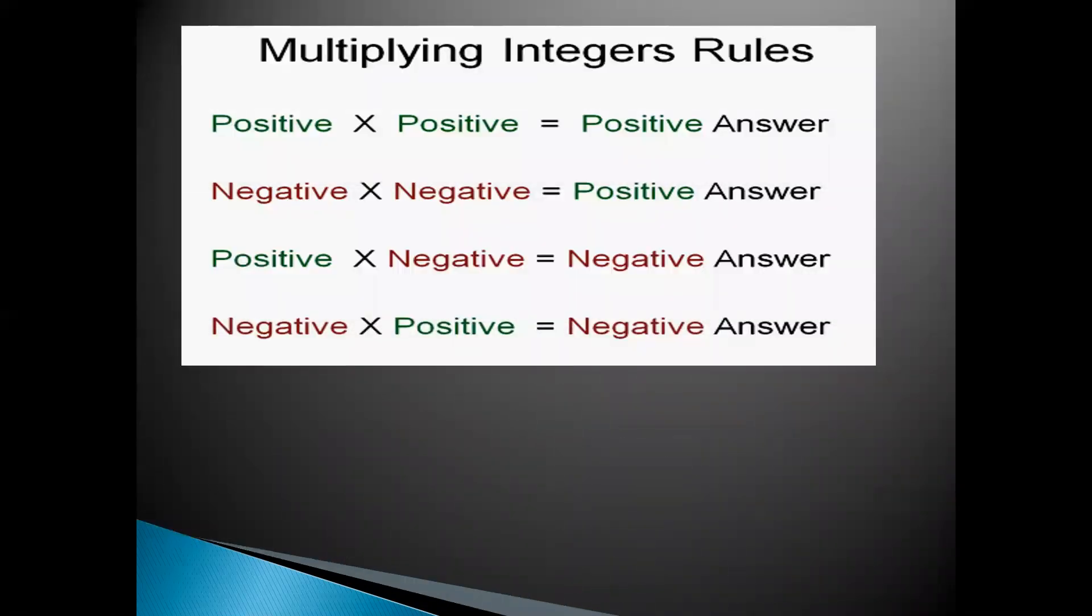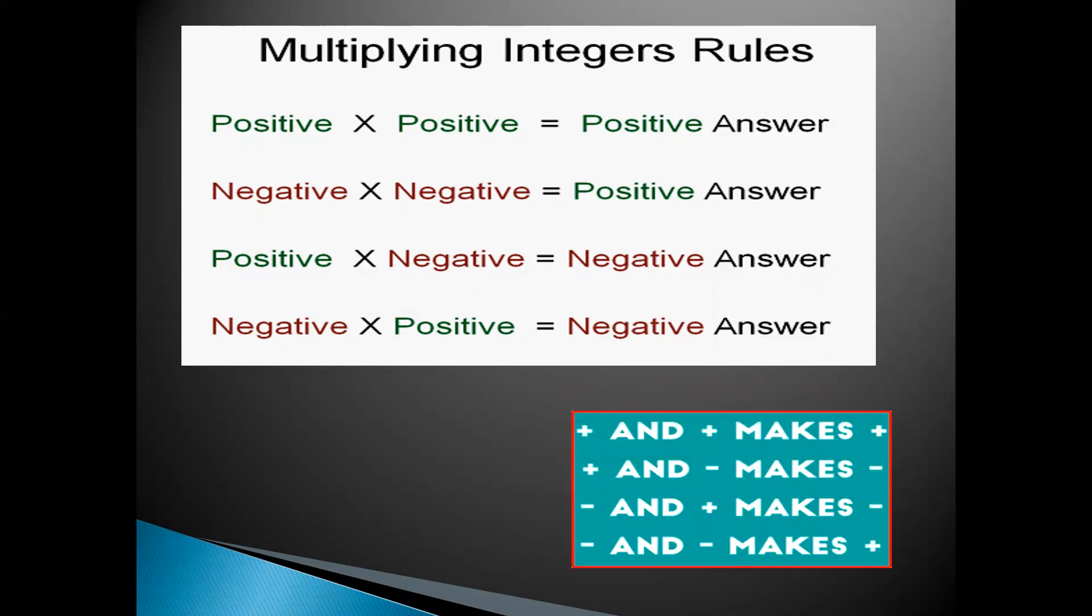Let us learn multiplying integer rules. Positive times positive will give you a positive answer. Negative times negative will give you a positive answer. Positive times negative, negative answer. Negative and positive, negative answer. You can also say like plus plus plus, plus minus minus, minus plus minus, minus minus plus.